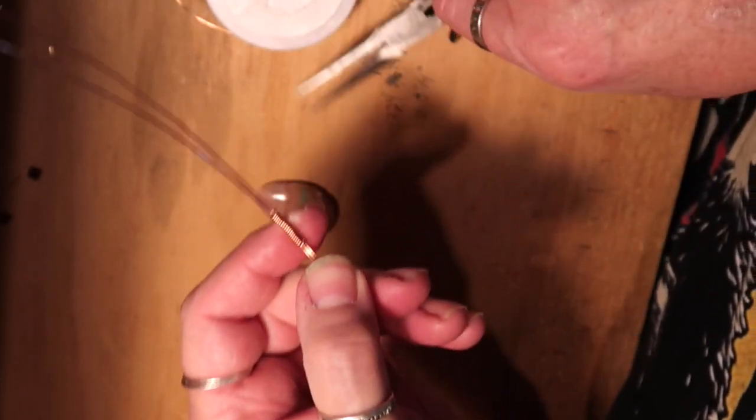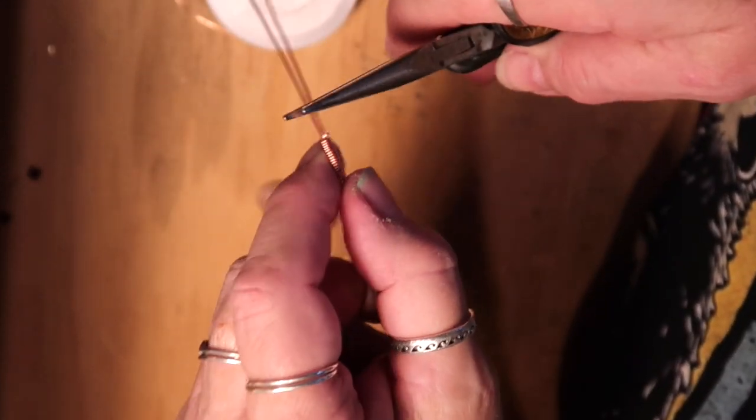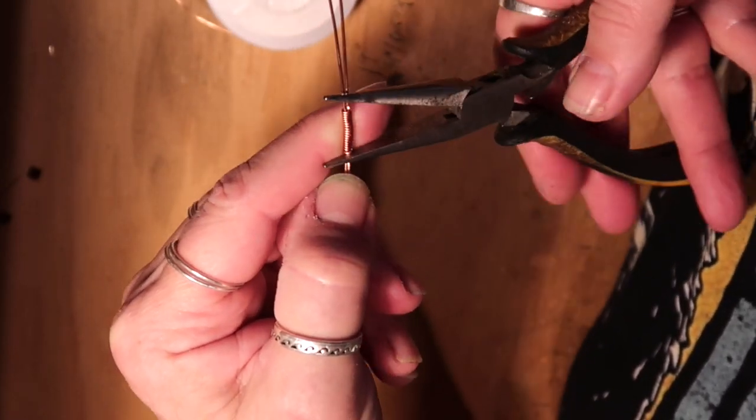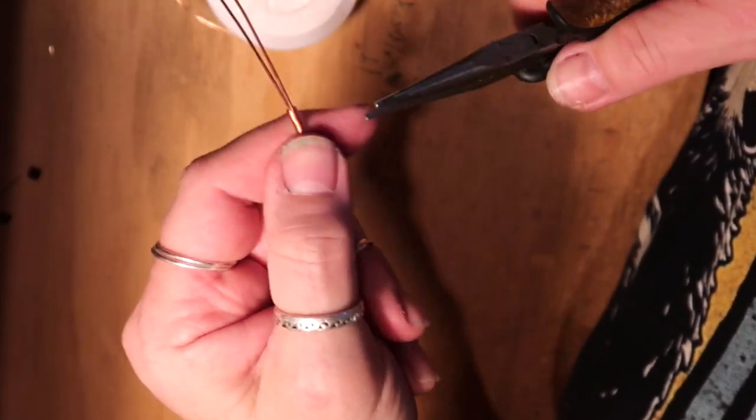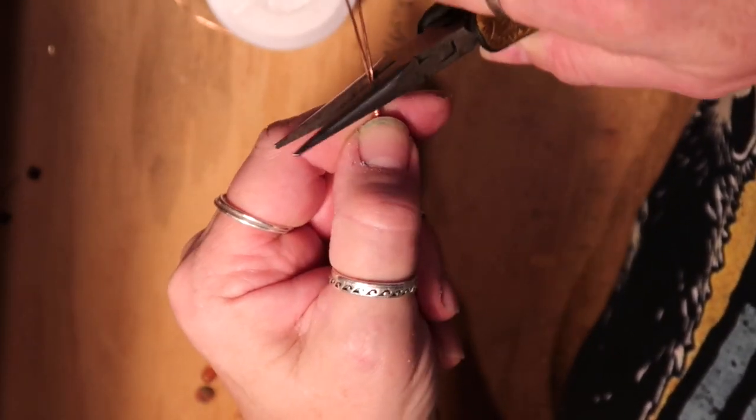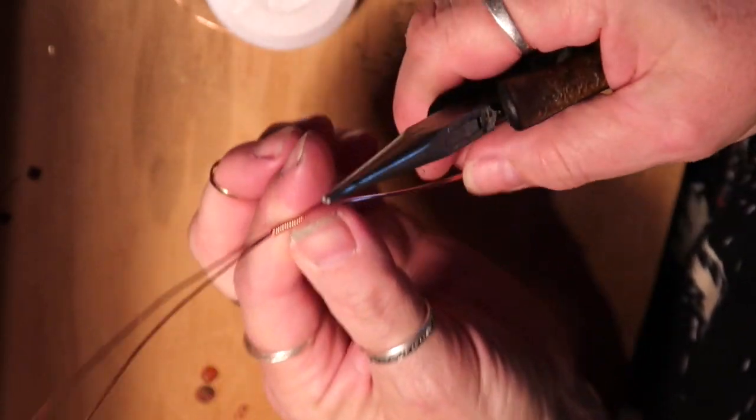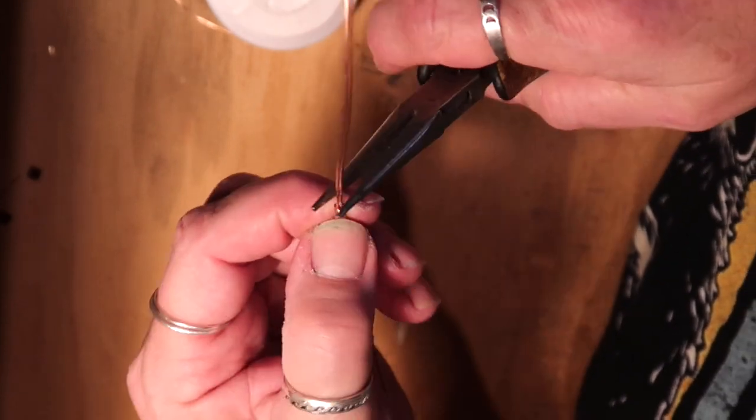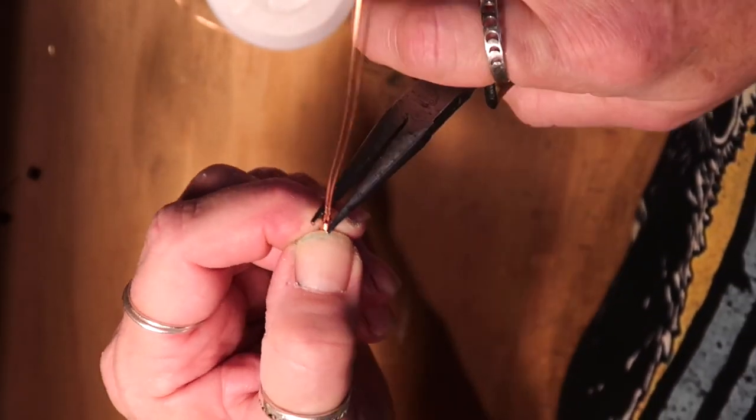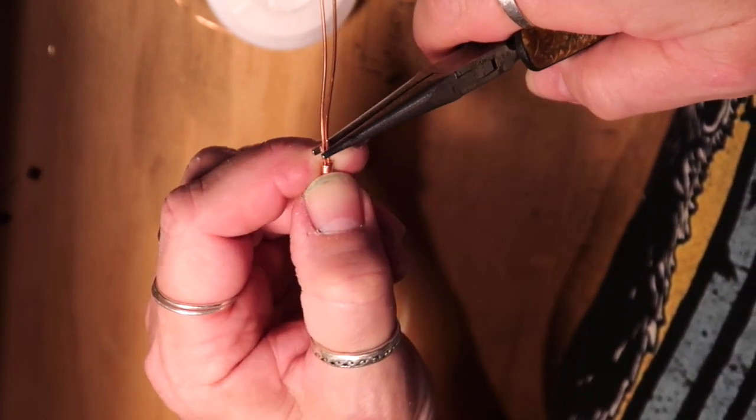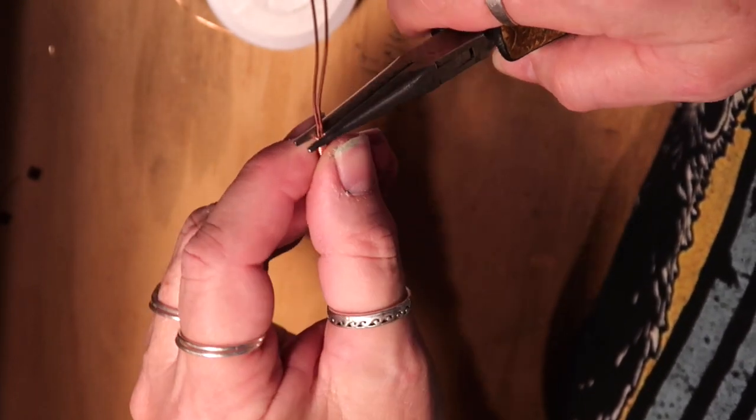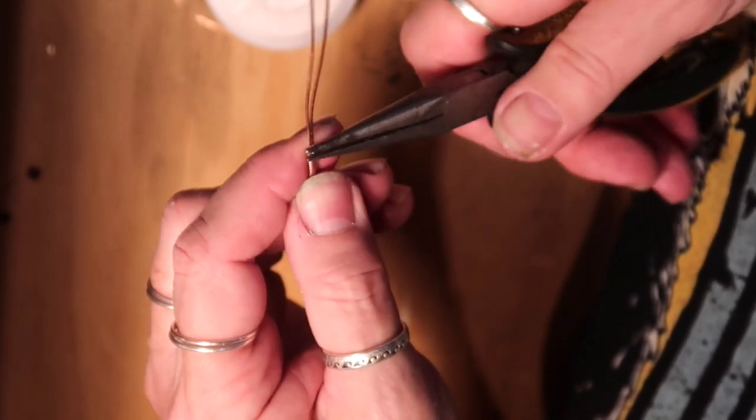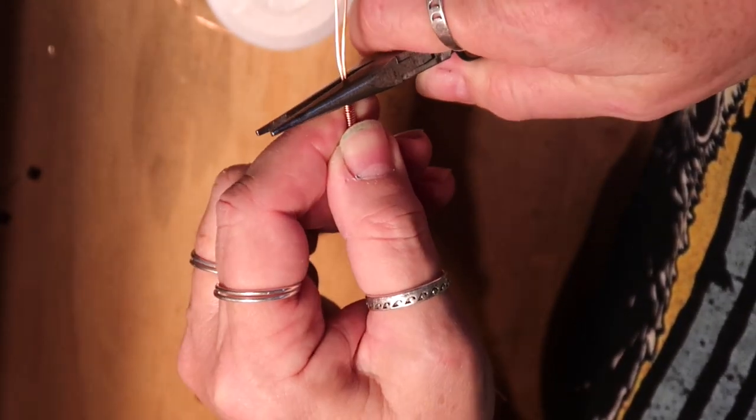I'm just going to squish that coil back together flush. Just like that. Then I'm going to use these and just push that tail in. The same over here. I'm just going to bring this around. There it is. You can't hide from me, little piece of copper wire.